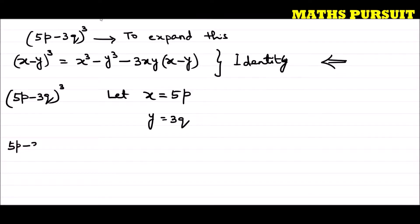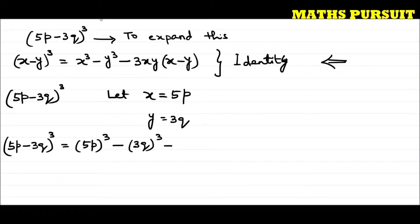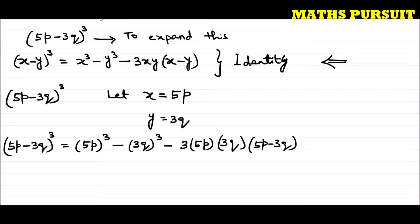So (5p minus 3q) to the power 3 equals x cubed which is 5p to the power 3, minus y cubed which is 3q to the power 3, minus 3xy which is 3 into 5p into 3q, into (x minus y) which is (5p minus 3q).